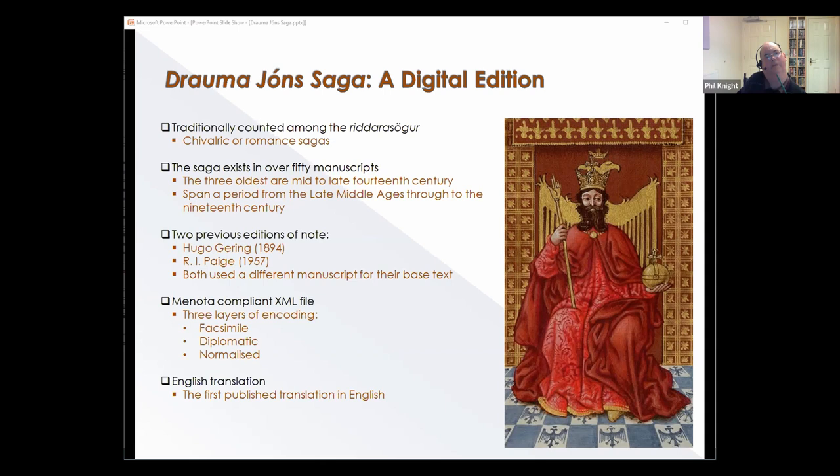The aim of my project was to produce a digital edition of Draumr Jóns saga. There's been two previous editions of note: a German edition published in 1894 by Hugo Gering and an English edition by Page in 1957. Both of these are based on a different manuscript from the one that I use for this project, which has the catalogue label AM 657 a-b 4º and it's a 14th century manuscript, possibly even the oldest.